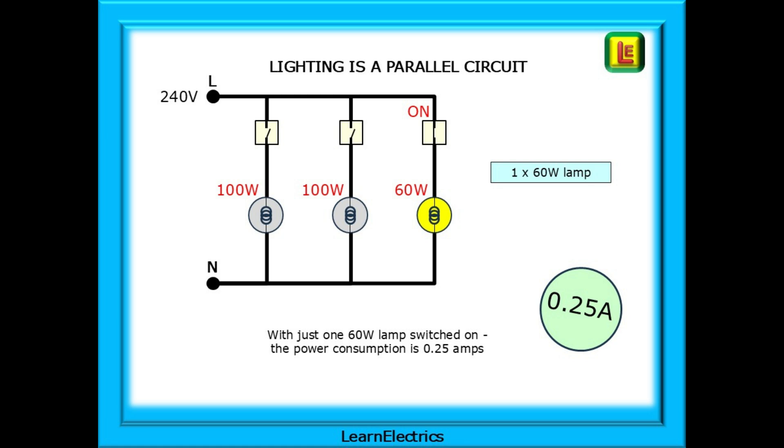Now, we turn off both 100 watt lamps and just turn on the 60 watt lamp. With just this one 60 watt lamp switched on, the power consumption is 0.25 amps. And this is true of all electrical accessories and appliances in parallel. More equipment turned on, more electricity is used. With less turned on or lower wattage appliances, electricity consumption falls.